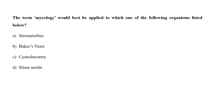The term mycology would be best applied to which of the following organisms: A. Stromatolites, B. Baker's yeast, C. Cyanobacteria, D. Slime molds? Mycology primarily refers to fungi. Stromatolites are layered rock or microbial reefs formed from blue-green algae, which is primarily a bacteria. Baker's yeast, that is Saccharomyces cerevisiae, is a unicellular fungi. Cyanobacteria is a bacteria, blue-green alga. And slime molds are protists. So the correct answer is option B, Baker's yeast.